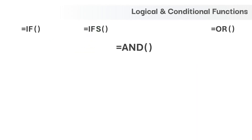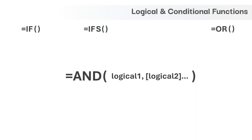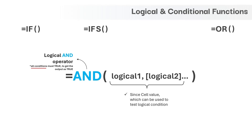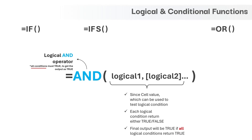The next function is AND and it has multiple logical arguments. Let's try to break it down. The name of the function AND literally denotes the AND logic condition, meaning the output of this function will be true only if all the conditions are true. We can give any single value along with comparison operators as input to these logical arguments and test the logical conditions. The output of each logical condition will be either true or false, and the final output will be true only if all the conditions are true, else it will be false.